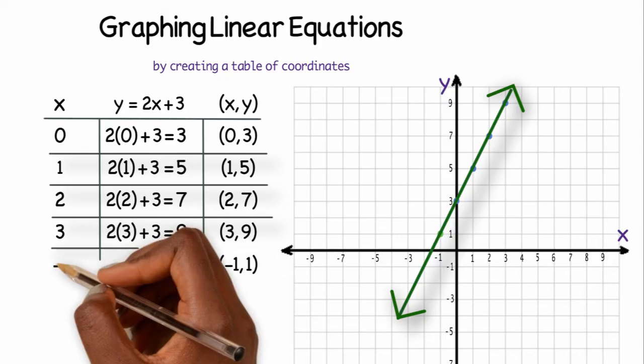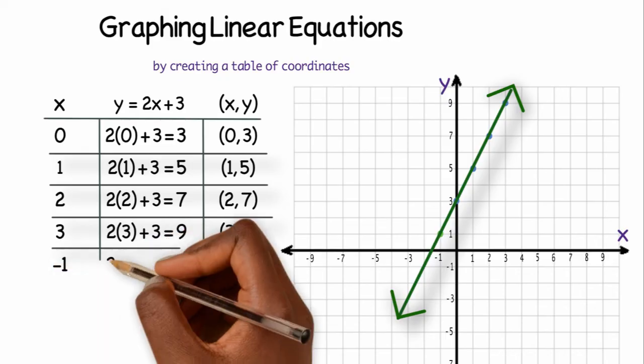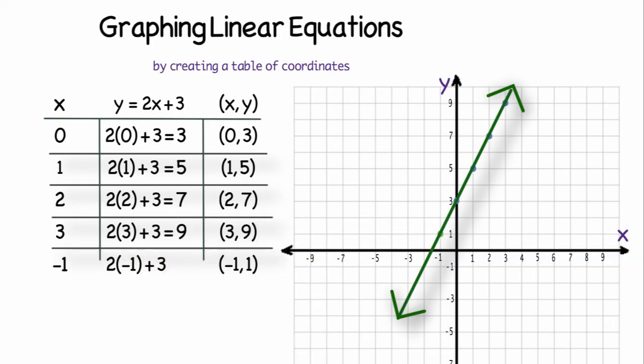I'll check that by plugging in negative 1 for my x value. So I'll do 2 times negative 1 plus 3. 2 times negative 1 is negative 2. Negative 2 plus 3 is 1. And that is correct.